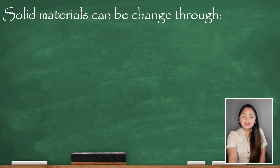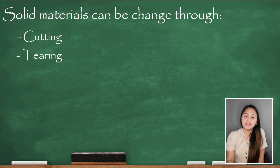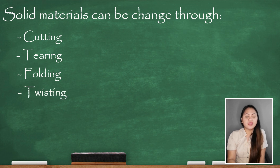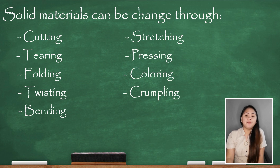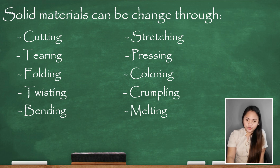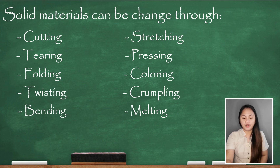Solid materials can be changed through many ways. We can change the appearance of solid materials in many ways — by cutting, tearing, folding, twisting, bending, stretching, pressing, coloring, crumpling, melting, and others. Such actions may change their size, color, shape, texture, and other characteristics and properties.